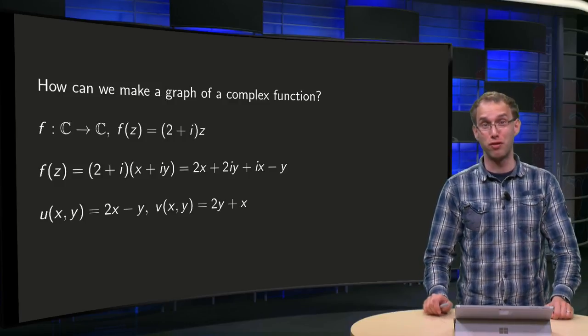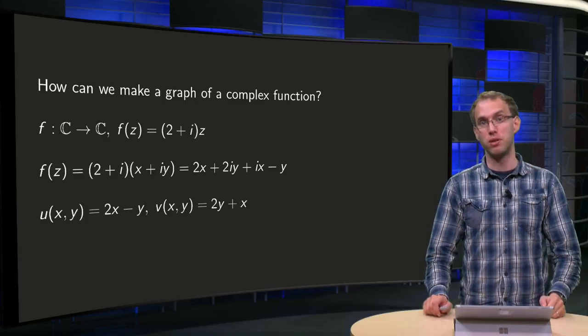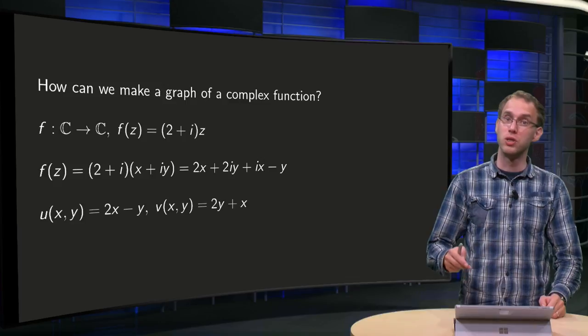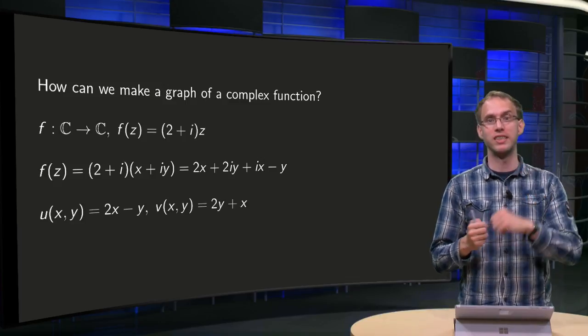How can we make a graph of a complex function? We need 2 axes for the complex numbers in the domain, and we need 2 axes for the complex numbers in the codomain, so 4 axes in total.